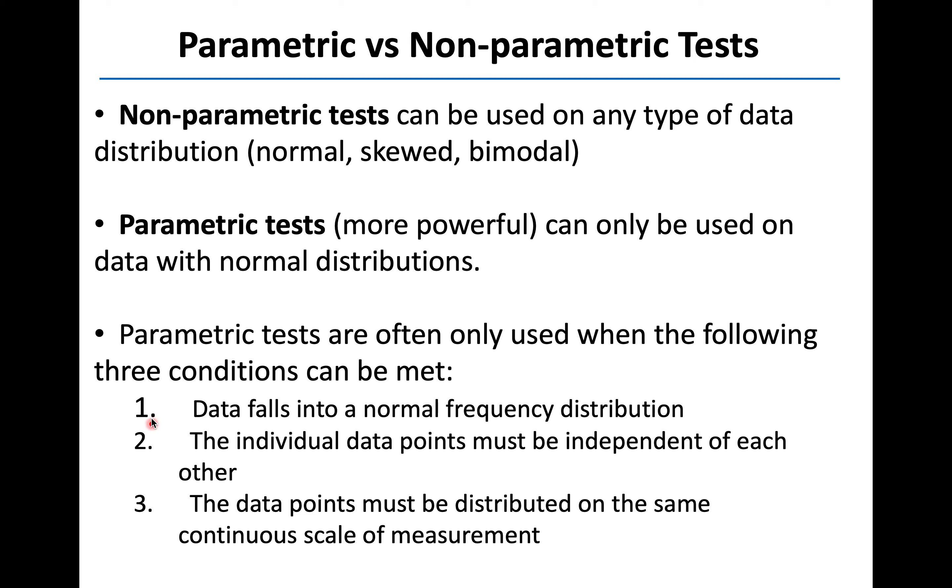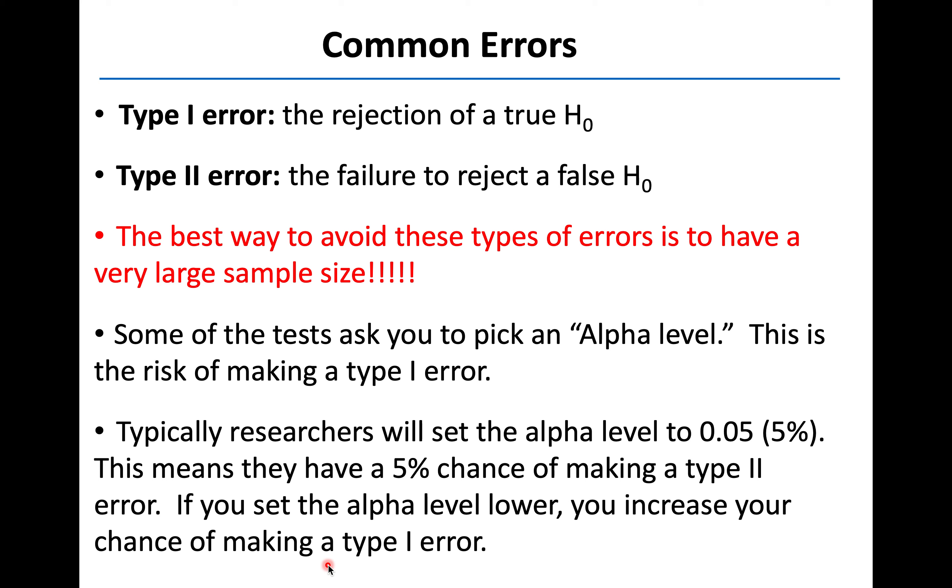You really have these three conditions that you'd have to meet if you're going to do a parametric test. We need that normal distribution, as I just mentioned. All the data points have to be independent of each other, so we can't have lots of overlapping data points. And all our data has to be on the same continuous scale of measurement. It does need to be a continuous scale.